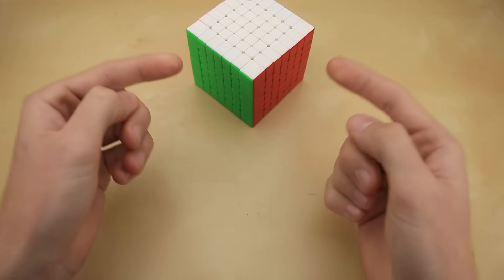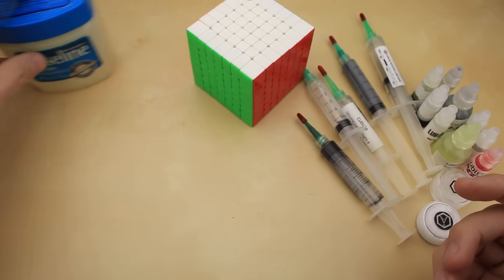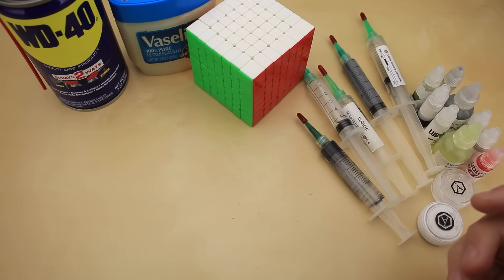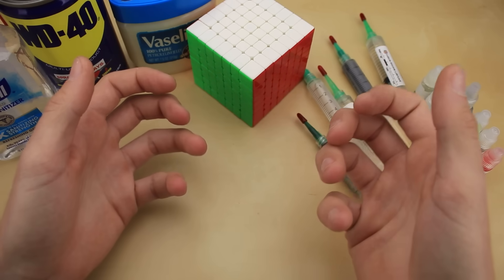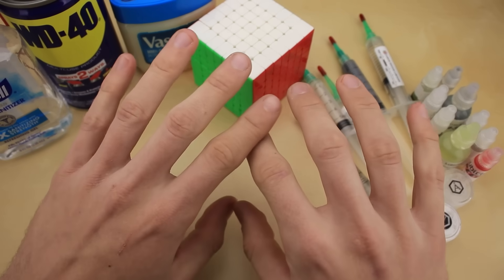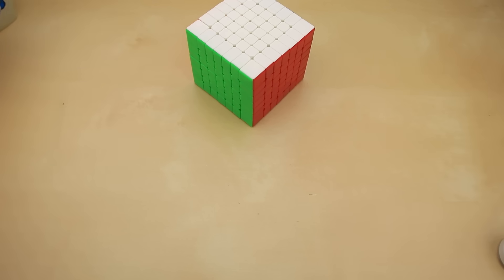So on this journey to the world's worst 7x7, you better bet we're going to be dumping in every cube lubricant known to man, as well as possibly a few things that aren't exactly cube lubricants. But it turns out, there's plenty of more interesting ways to make a cube terrible without a drop of lube involved, so we're going to be saving this chaos until the end of the video.